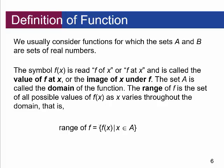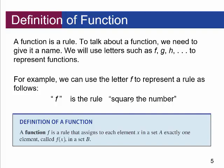The set A is called the domain of the function — the allowable inputs. The range of F is the set of all possible values of F of X as X varies throughout the domain. The outputs of the squaring function will never be negative, so its range is 0 to positive infinity. The domain is all real numbers, because you can square a negative number — like negative 5 times negative 5 is 25.